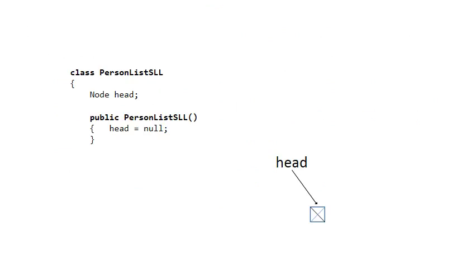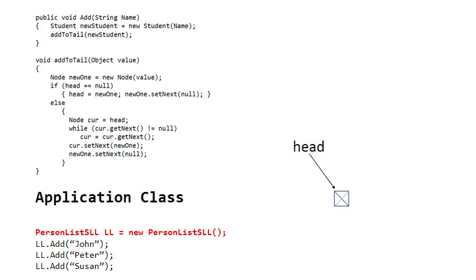Let's start and build a new singly linked list. The class is called personListsSLL — it simply means we've got a list of people and we're going to use a singly linked list to build this list. There's one attribute called head, and in the constructor, head is assigned to null. So head, right at the start, is simply a null pointer, and the singly linked list at this stage is empty. In the application class, you declare an instance of the list: personListSLL is a new person list. What we have created here is head — a null pointer — so the singly linked list is empty.